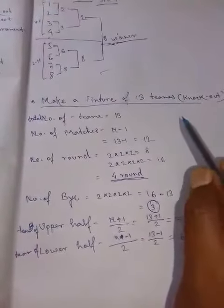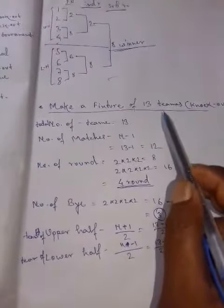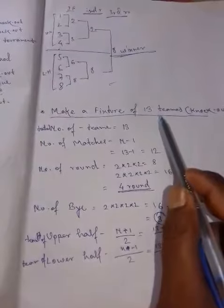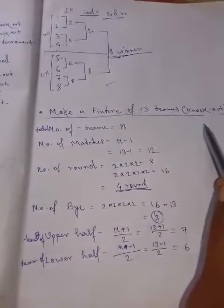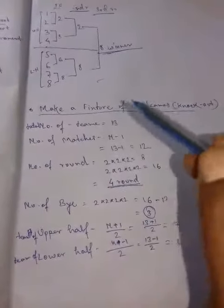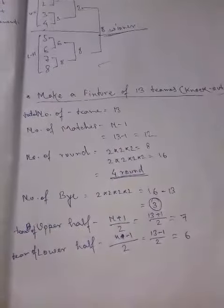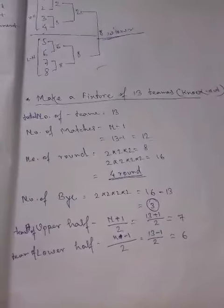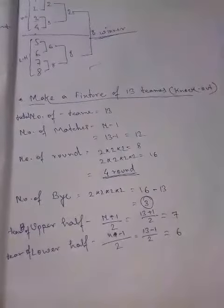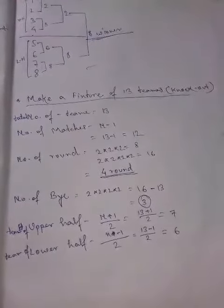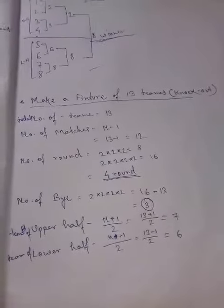The main thing is that we have to see if power of 2 is equal or not. If we have 8 teams, we have to see if it is equal, then there is no problem. But if power of 2 is not equal to number of teams, then there is a term called bye.